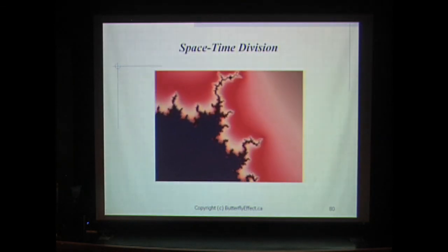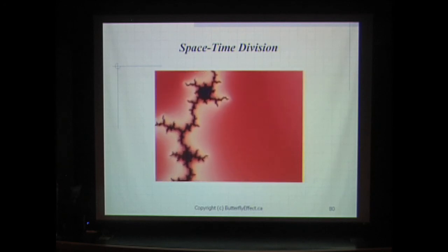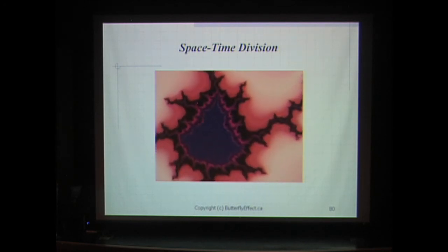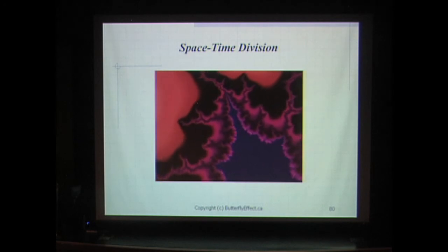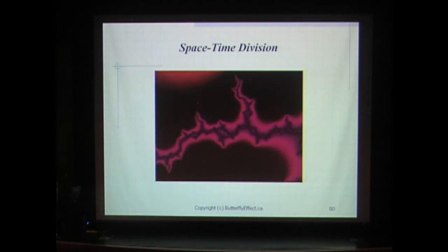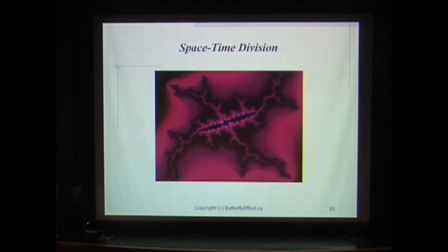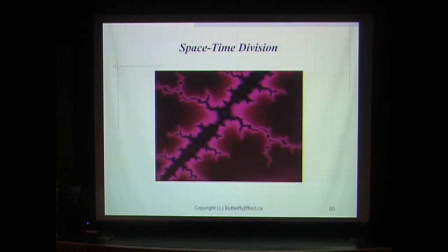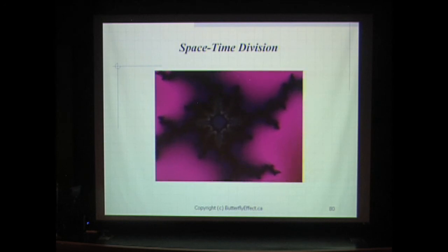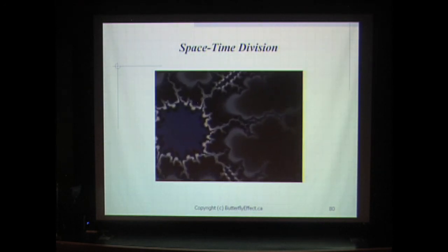As you zoom into the Mandelbrot set, what's happening is that space-time is dividing. And as space-time divides, more stuff seems to appear in between. Stuff appears because space-time is dividing in a fractal manner. Hoyle's creation field could, in fact, be a strange attractor.